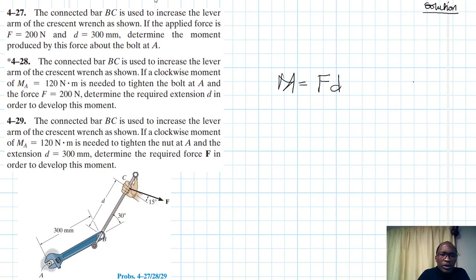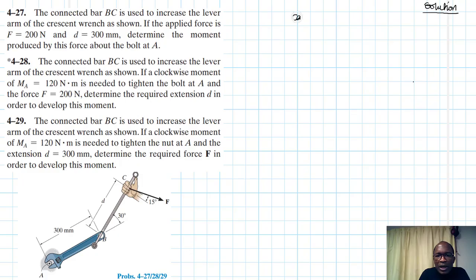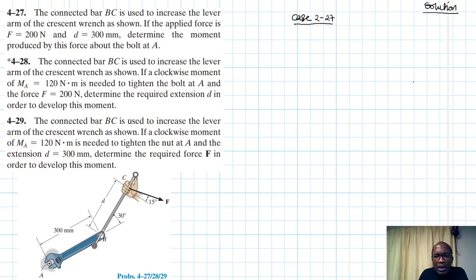In the first case — case 4-27 — we have been asked to find the moment about point A, or the summation of moments about point A, or the resultant moment about point A.